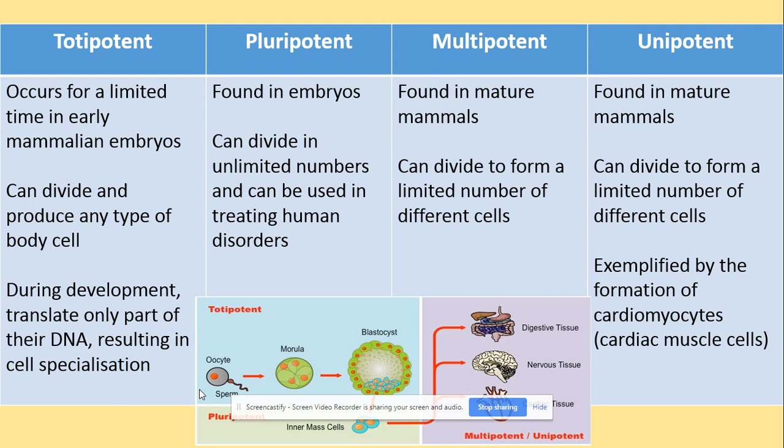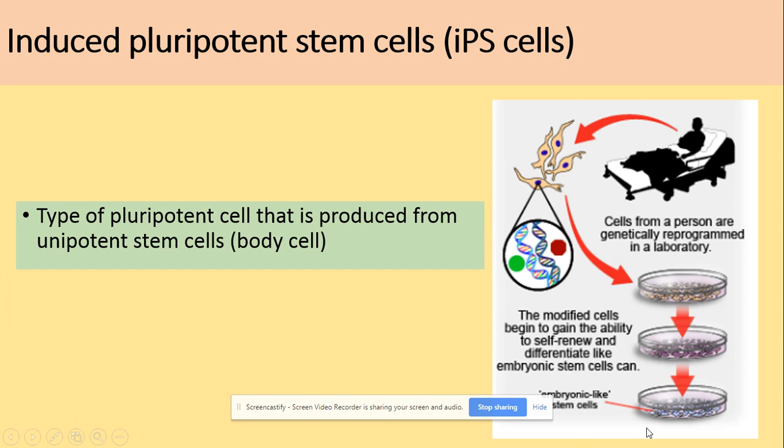Pluripotent cells can divide in unlimited numbers and can be used to treat human disorders. Multipotent cells are found in adult mammals and can divide to form a limited number of different cell types — for example, the formation of cardiomyocytes, which are cardiac muscle cells. The specification also asks you to know what induced pluripotent stem cells, or iPS cells, are — those are a type of pluripotent cell.